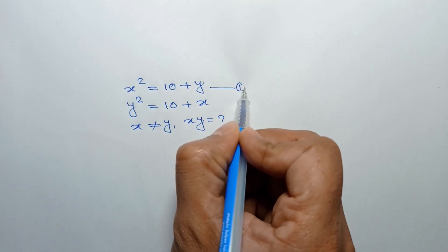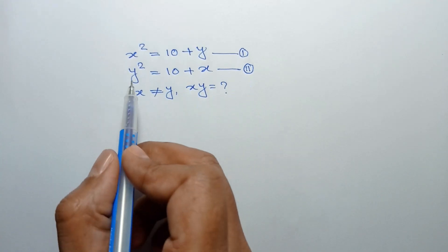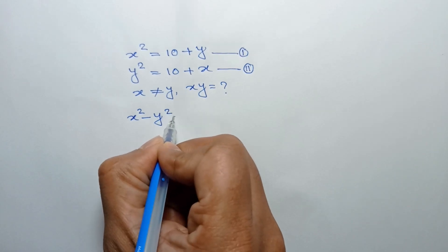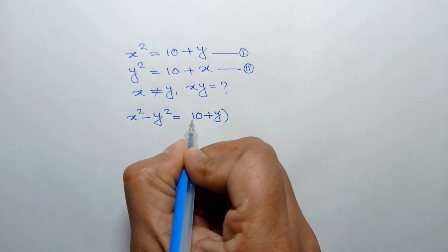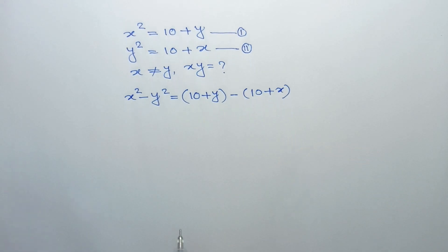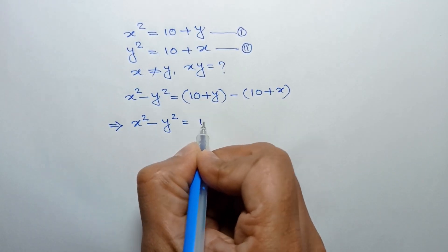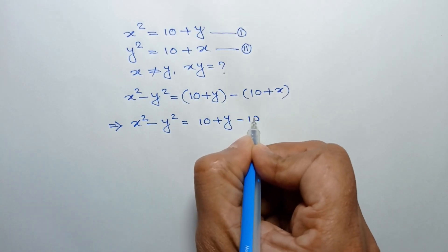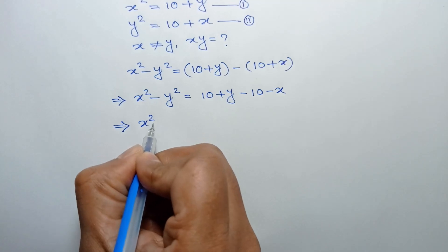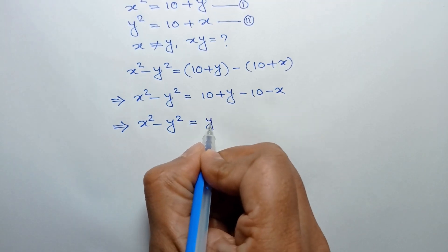Let's call it equation number 1 and equation number 2. Now if we subtract equation 2 from equation 1, we can write x squared minus y squared is equal to 10 plus y minus (10 plus x), which simplifies to y minus x, since the 10s cancel out.